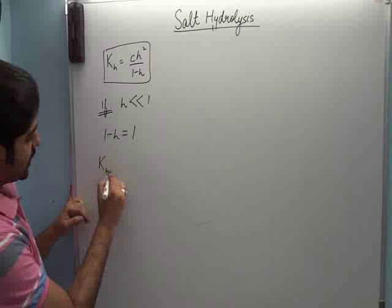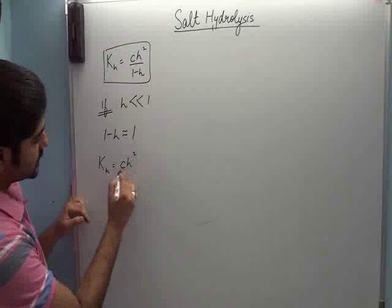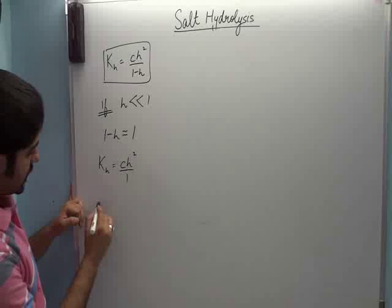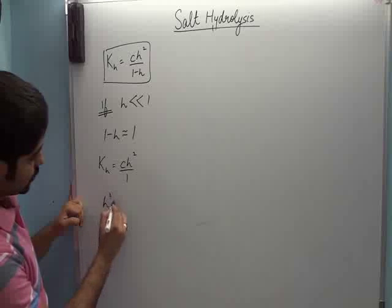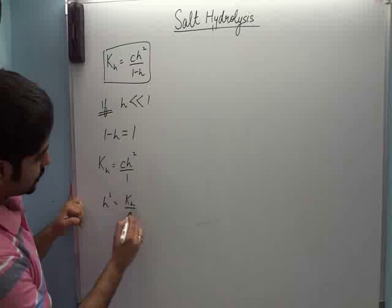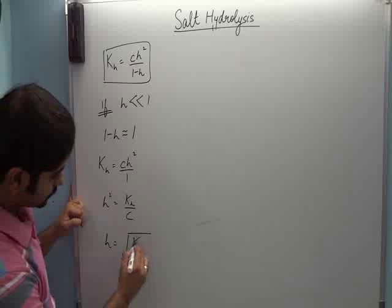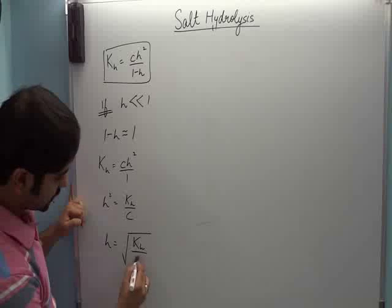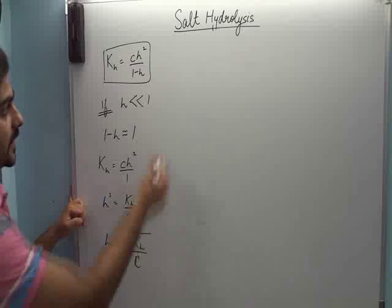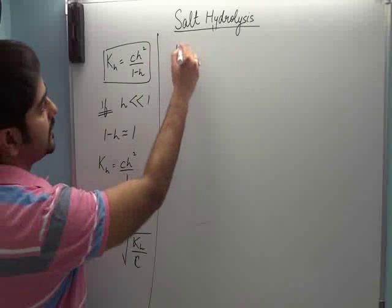To ye expression ho jayega KH is equal to CH square upon 1. Then H square is equal to KH upon C. Then H becomes root of KH upon C. H ki value nikal aayi.